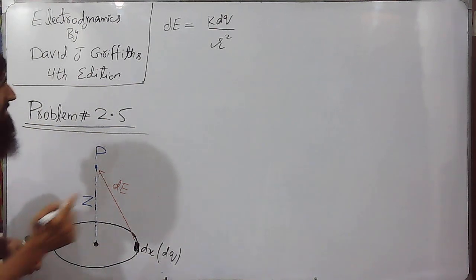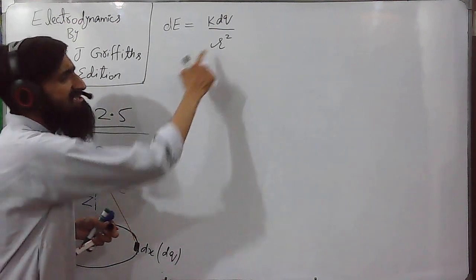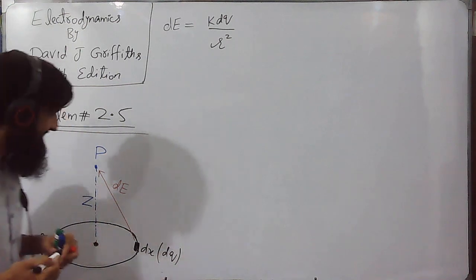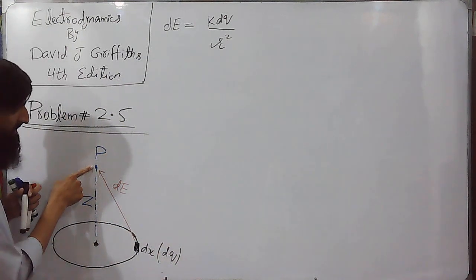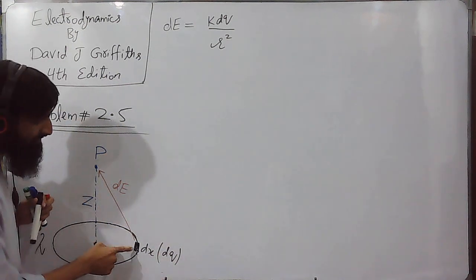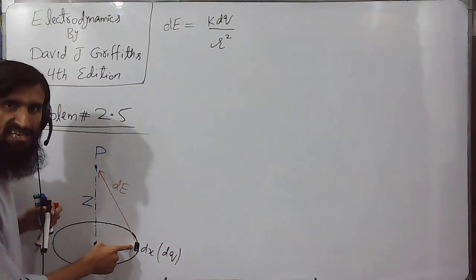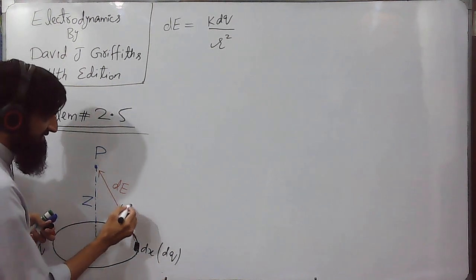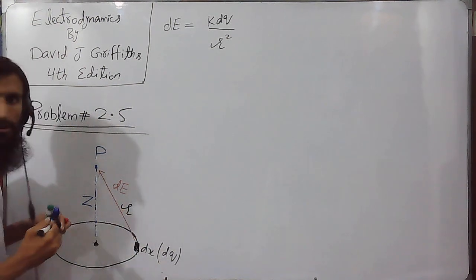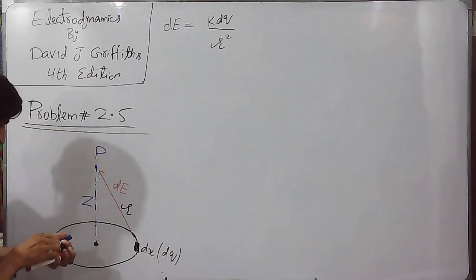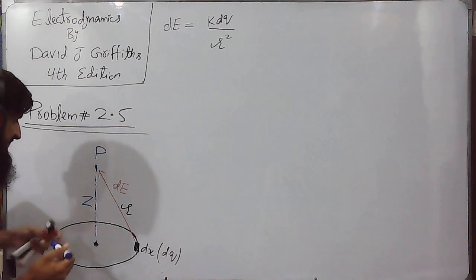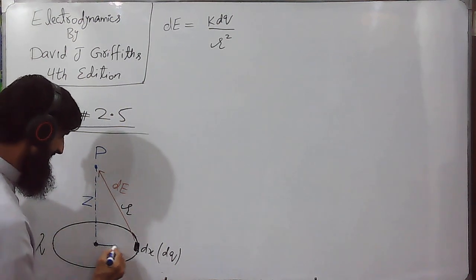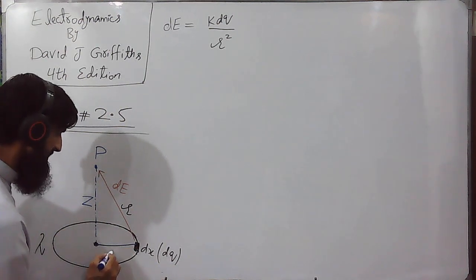Here, r is the distance from point P to the charge element, and that distance is named as lowercase r, while the radius of this circular loop is named as capital R.